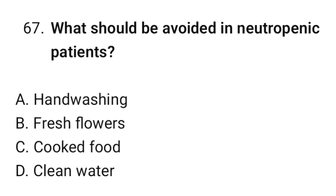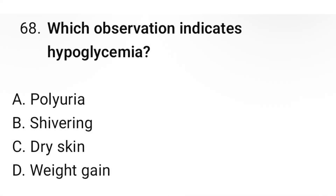Question number 67: What should be avoided in neutropenic patients? The correct option is B: Fresh flowers. Question number 68: Which observation indicates hypoglycemia? The correct option is B: Shivering.